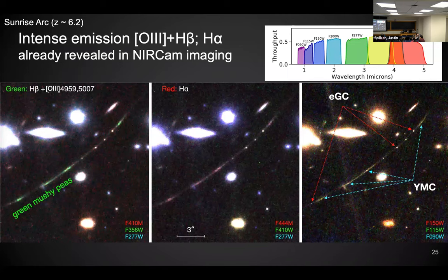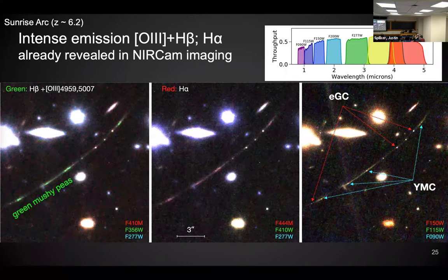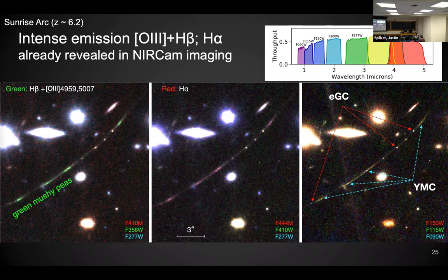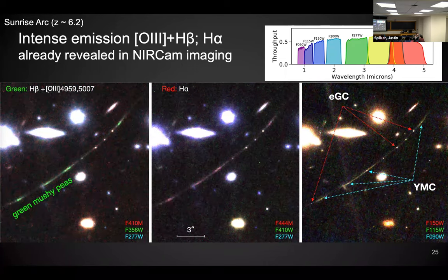These things called green pea galaxies were actually discovered by amateur astronomers in the Sloan survey — they were just looking at images and some galaxies showed up bright green because they had intense emission at a certain wavelength. We're seeing a similar thing here: at the F356W filter at three and a half microns, certain parts of the galaxy light up with this intense emission showing these parts are really young, like a few million years old, with really intense star formation — even before we take the spectrum.